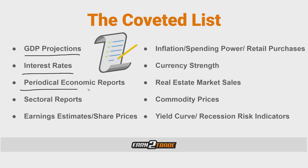Next up we have periodical economic reports. Traders of futures contracts on commodities, indices, currencies, or bonds often keep an eye on annual, biannual, quarterly, or monthly reports, since they reflect the state and projected trajectory of the economy. In terms of the broader US economy, notable reports in this category include the Beige Book, the Fed's Monetary Policy Report, and releases from the US Bureau of Economic Analysis. These are important reports worth paying attention to.